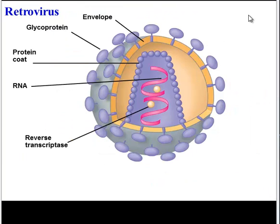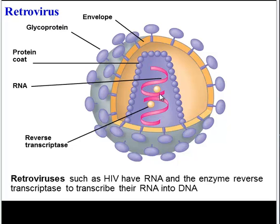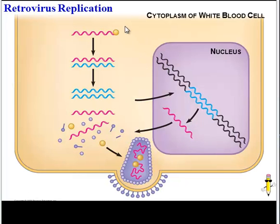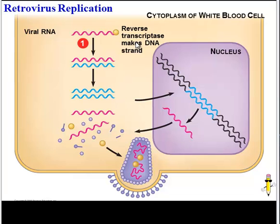Let's take a moment to focus on a particular type of virus called a retrovirus. HIV is a retrovirus. What's interesting about this virus is that it has RNA as its genetic material, but it also has a special enzyme called reverse transcriptase. Some viruses have RNA but don't have this enzyme — those are just called RNA viruses. But if a virus has reverse transcriptase, it's considered a retrovirus. So here is how HIV and other retroviruses work. Once the viral RNA is in the cell, the reverse transcriptase enzyme is used to reverse transcribe RNA into DNA.